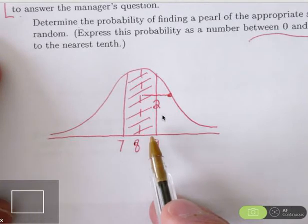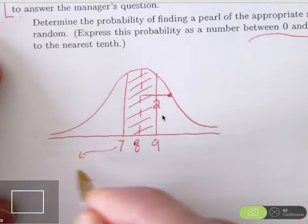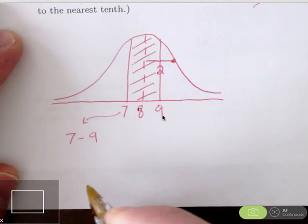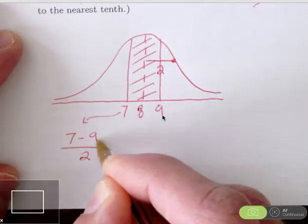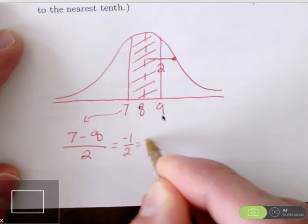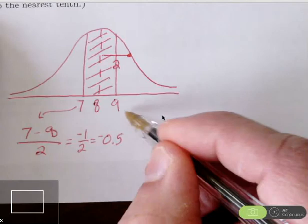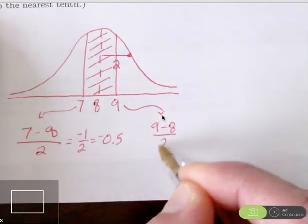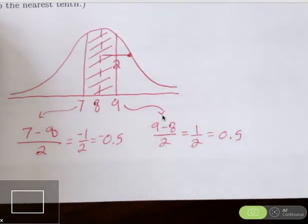To find this percentage, we're going to turn that 7 and 9 into z-scores. So we'll take 7, subtract the mean of 8, I apologize, the mean is 8, not 9, and divide by the standard deviation of 2. That's going to make negative 1 half. Of course, you can write that as just negative 0.5 if you prefer to enter it into the calculator that way. A z-score for the 9, that will be 9 minus the mean of 8 divided by 2. That's positive 1 half. We can think of entering that as 0.5 into the calculator.